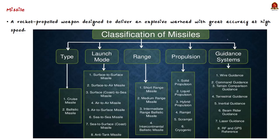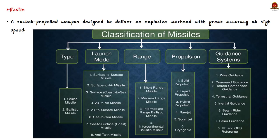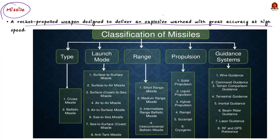This is the first major weapons test by North Korea in the current year. In this context, let us learn about hypersonic missiles, a type of cruise missile. A missile is a rocket-propelled weapon designed to deliver an explosive warhead with greater accuracy at high speed. There are five types of missiles: air-to-air, air-to-surface, surface-to-air, anti-ship, and anti-tank.